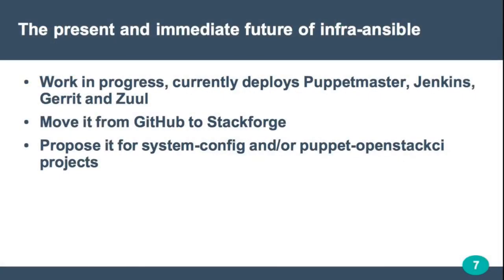The present status of InfraAnsible: it is currently a work in progress. Right now it works and deploys the Puppetmaster, Jenkins, Gerrit, and Zuul. I'm currently working on NodePool, which would complete the first stage of InfraAnsible — the bare minimum for OpenStack Infra. I'm hoping to move it from my local GitHub to Stackforge this week to get people from the OpenStack community to contribute and add tests. I'd also like to propose it for system-config and the puppet-openstack-ci projects, because InfraAnsible can be really handy for integration testing. Right now system-config and its Puppet modules only have unit testing but no integration testing, so I think this could be very useful.